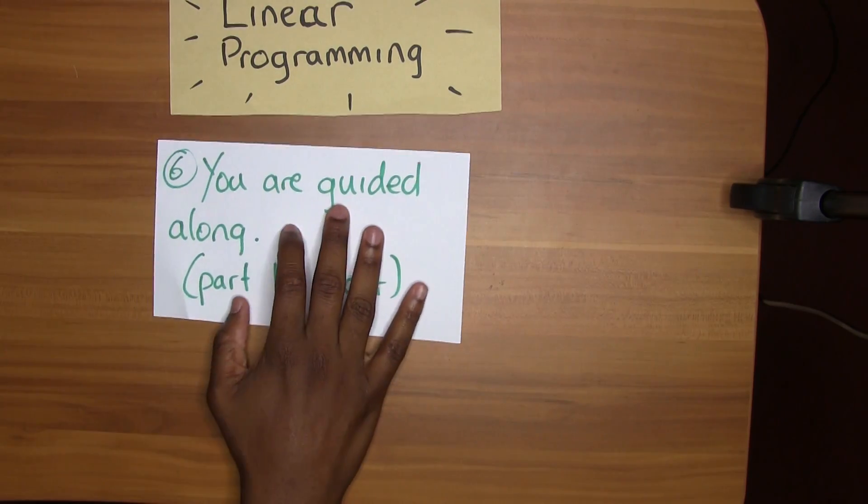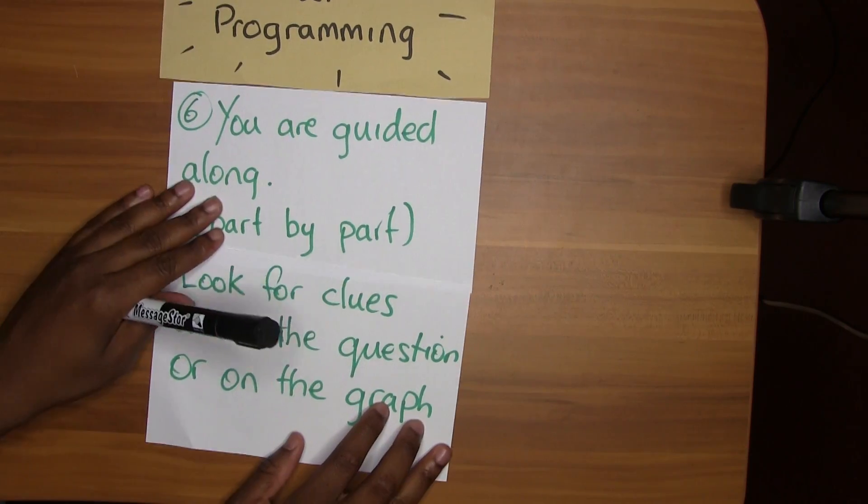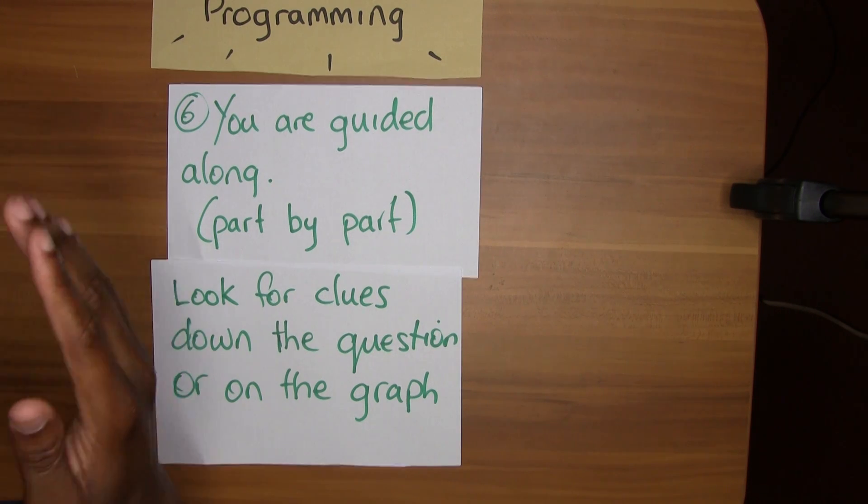You'll see a clear demonstration of this in the next video. Finally, the sixth thing to remember in a linear programming question is that you are guided along the question part by part — each part guides into the next. Look for clues down the question or on the graph they give you. They may give you a graph with equations of lines, and you can use those to get your inequality. Linear programming questions are becoming much easier as the years progress, likely because fewer marks are allocated, so the examiner guides you along the question more. I had to look at older years to find some really good questions, and I'll do those in the next video.